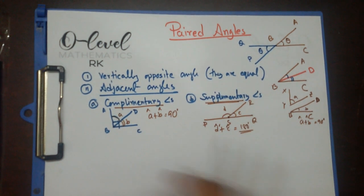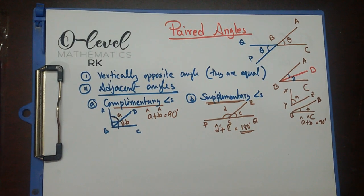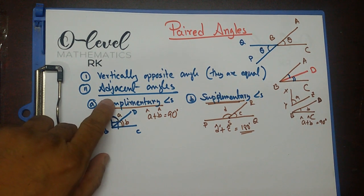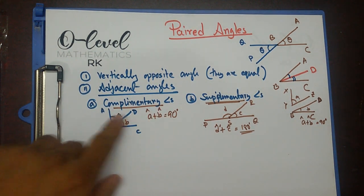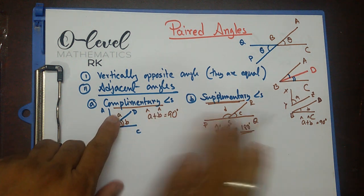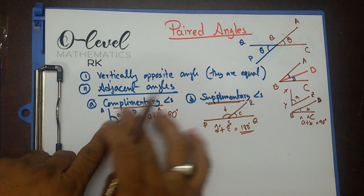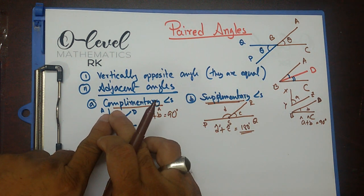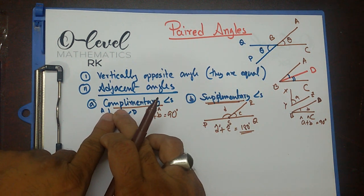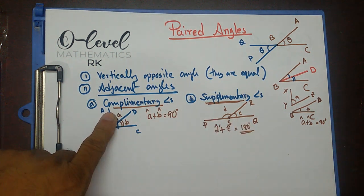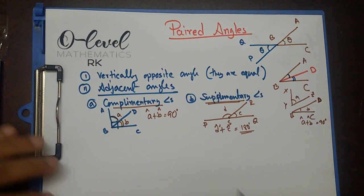So in the adjacent angles category, I have two different types: complementary angles and supplementary angles.